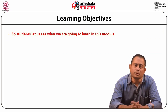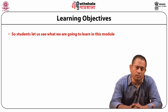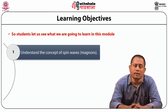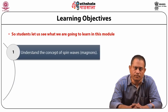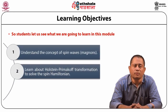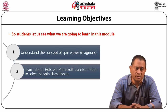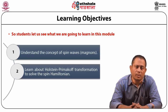Let us see what we are going to learn in this module. First thing, understand the concept of spin waves, which are also known as Magnons. Learn about the Holstein-Primakoff transformation to solve the spin Hamiltonian. This is a very special transformation that you have to learn to solve spin Hamiltonians.